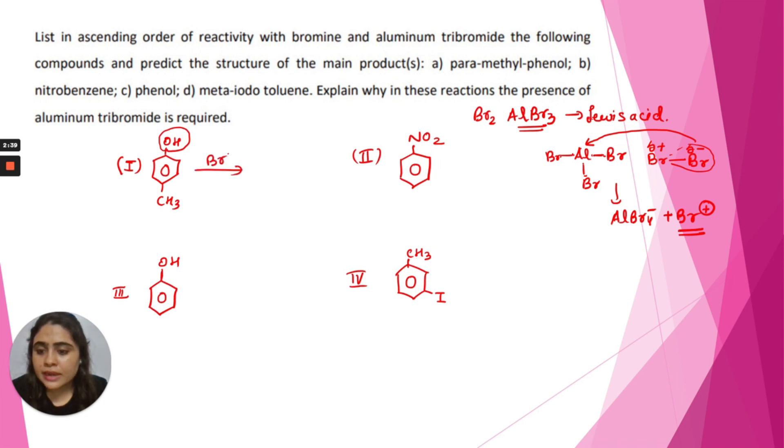So this bromonium ion will attack only at the ortho position of the CH3 group. So this will be the product of this reaction.